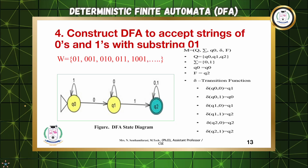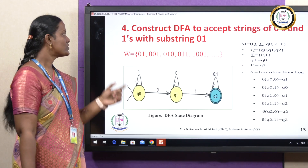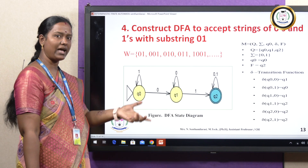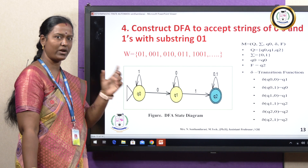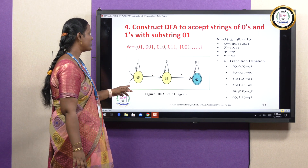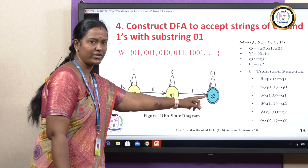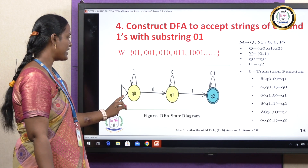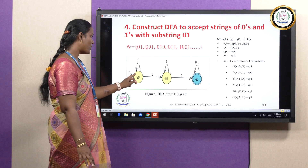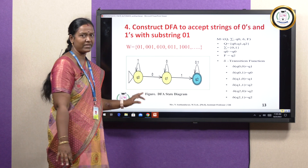The fourth problem: construct a DFA to accept strings of zeros and ones with substring 01. Unlike the first problem with AA, here the substring is 01 — a combination of 0 and 1. Before and after the substring, any zeros or ones are accepted, and a string of only 01 is also accepted. From Q0, on input 0 it moves to Q1. On input 1, it self-loops at Q0. From Q1, on input 1 it moves to Q2 (final state). The string 1, 0, 1 is accepted since 01 appears as a substring.